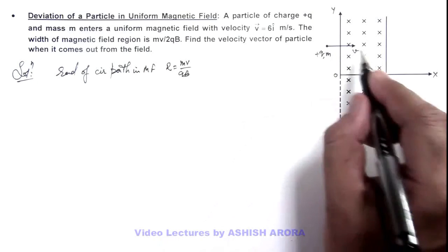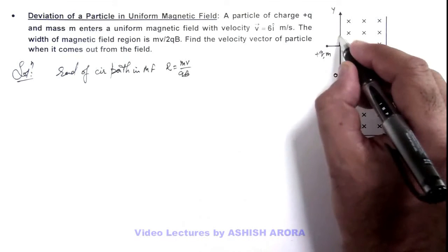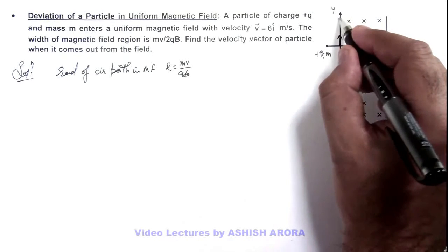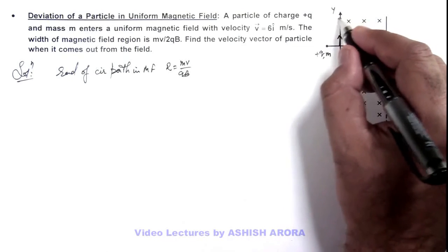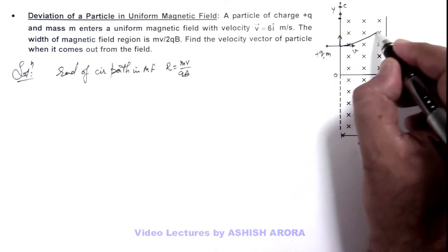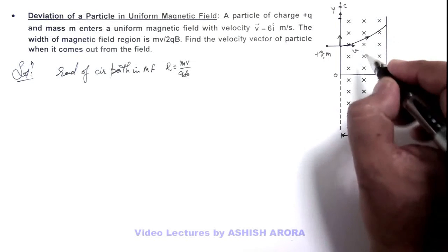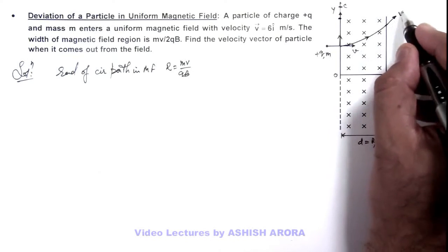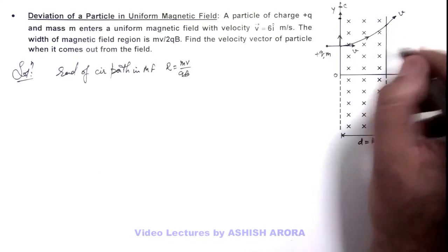So when the charge enters this magnetic field it experiences an upward magnetic force. If somewhere here on this y-axis the center of field is there, it follows a circular path and finally comes out with the same speed v because speed never changes.